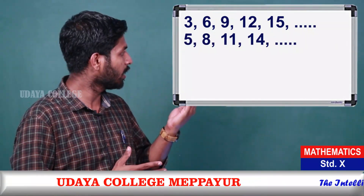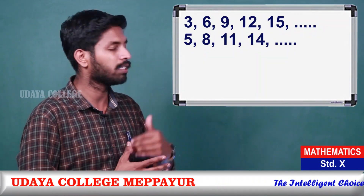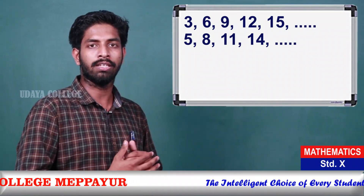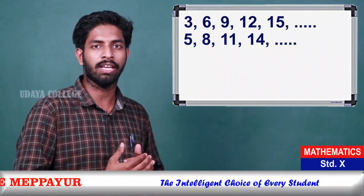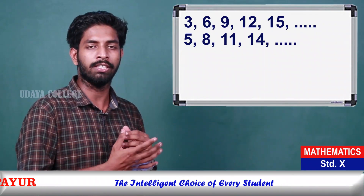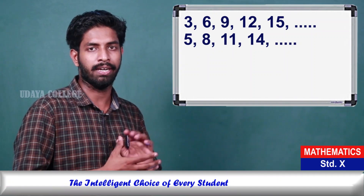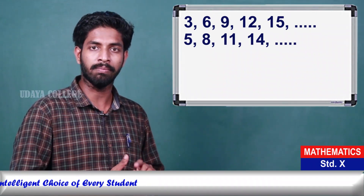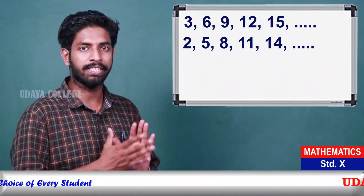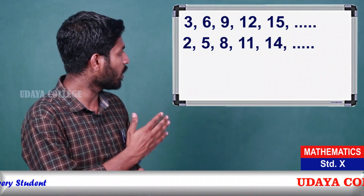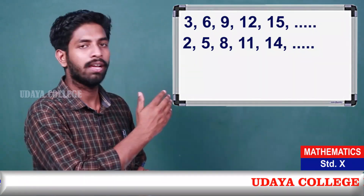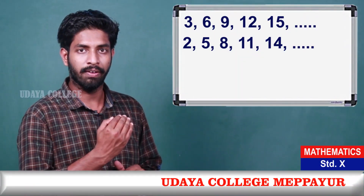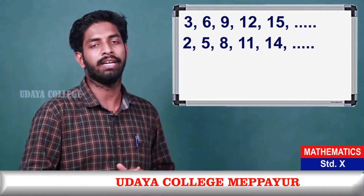If you choose 3, you have: 5, 8, 11, 14. Writing the same common difference of 3 each time: 2, 5, 8, 11. The common difference is 3.